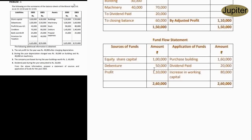This is fund from operation — this is our sources of funds. This is our application of funds: we have purchased buildings worth 1,60,000, dividend paid 20,000, and increase in working capital 50. This is our fund inflow. This is our complete fund flow statement. If you have any doubts, please comment in the comment section — I will try to explain it. Thank you.